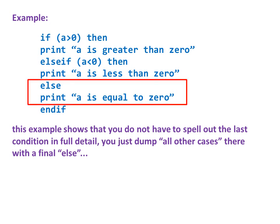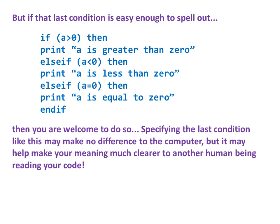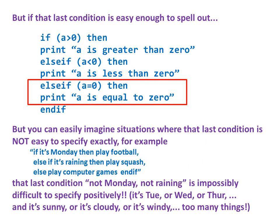This example shows that you do not have to spell out the last condition in full detail. You can just dump all other cases there with the final ELSE. But if that last condition is easy enough to spell out, then you're welcome to do so. Specifying the last condition like this may make no difference to the computer, but it may help make your meaning much clearer to another human being reading your code.